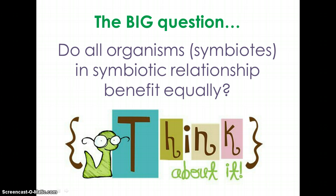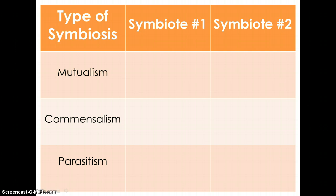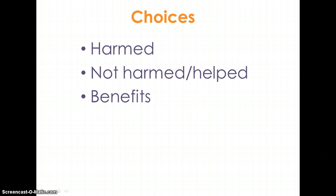Here's the big question: do all symbiotes in a symbiotic relationship benefit equally? On your note sheet, you have a chart that indicates the three types of symbiosis and the impact of the relationship on symbiotes one and two. As we go through the next few slides, fill in the blanks with the following words: harmed, not harmed or helped, or benefits. These words are also printed on your note sheet.